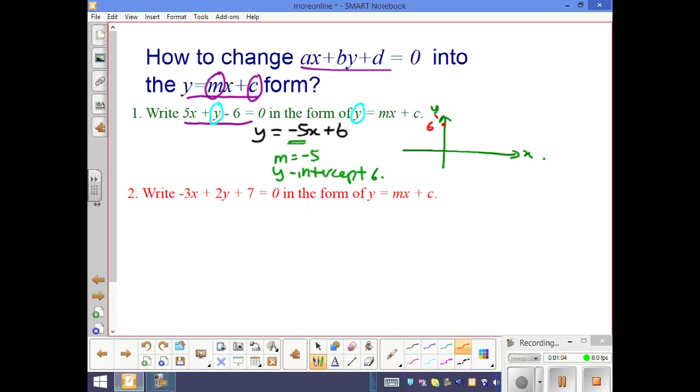And then the line goes this way, Y equal to negative 5X plus 6, and there will be one unit across and then five units down, for example here. So this one will be 1,1, this point here will be 1,1.